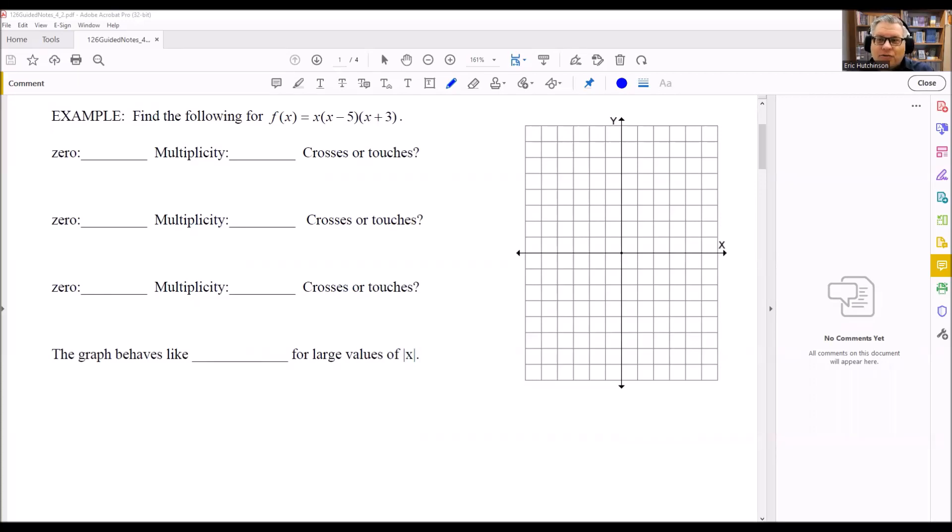For this problem, we need to find the zeros, the multiplicity, whether it crosses or touches, and then we're going to use all this information to graph.